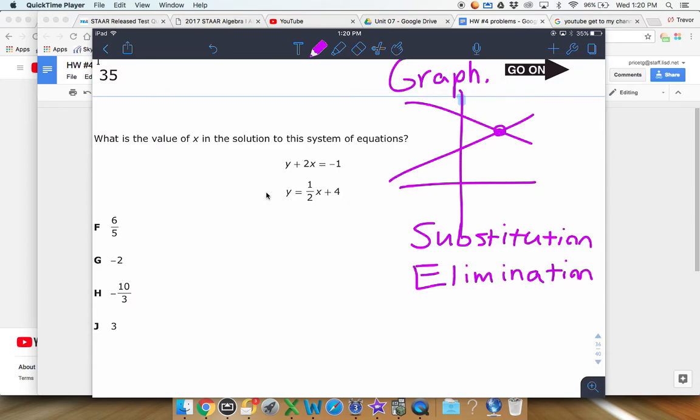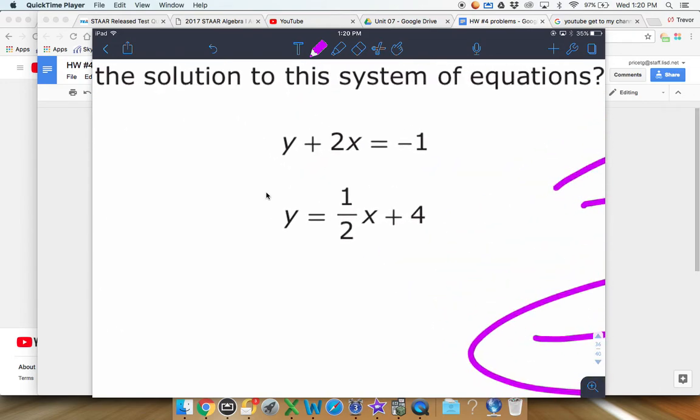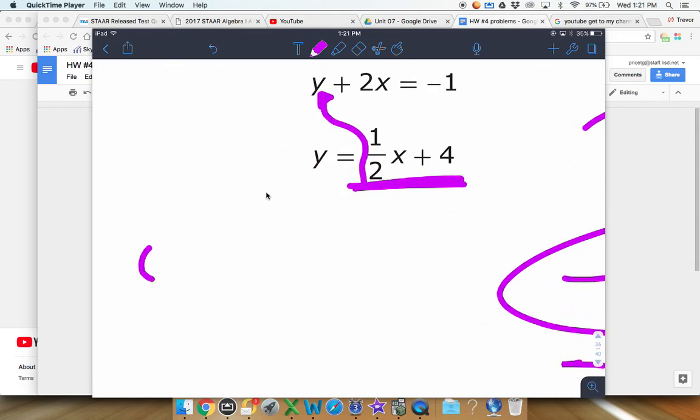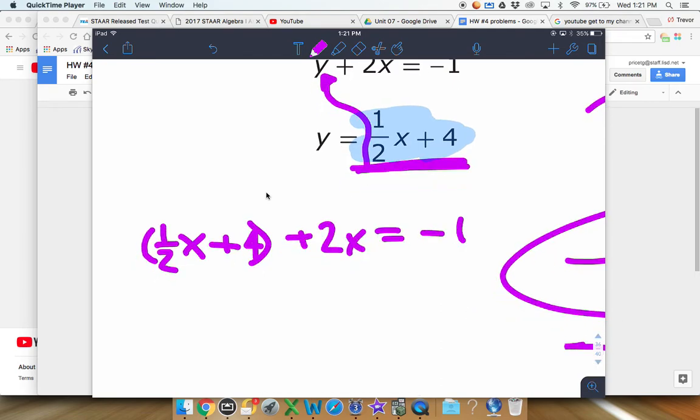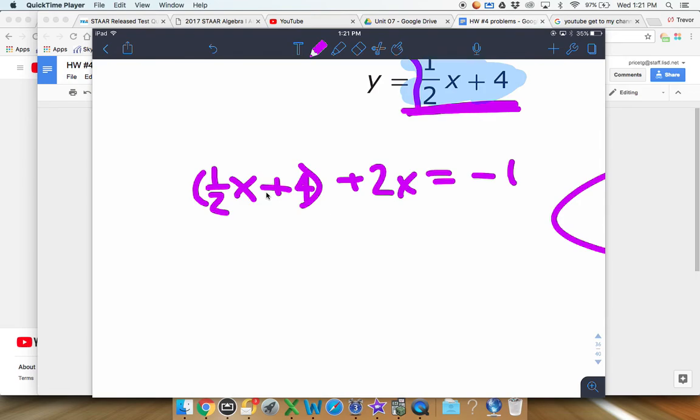With this example, I'm going to use substitution just because it's ready to go for substitution. In substitution, you want to solve for x or solve for y on one of your equations, and then you want to take what the y is equal to - in this case it's already solved for y - and you want to plug that stuff in for this y on the other equation right there. So instead of writing y on that y plus 2x equation, we're going to put y plus 2x equals negative 1, but instead of the y we put in what y is equal to here. So that's the one half x plus 4.